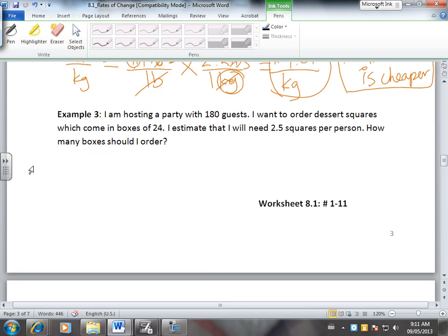And let's do one last example. I am hosting a party with 180 guests. I want to order dessert squares which come in boxes of 24. I estimate that I will need 2.5 squares per person. How many boxes should I order? So things that we know first of all is that one box equals 24 squares. And we think that one person needs about 2.5 squares.